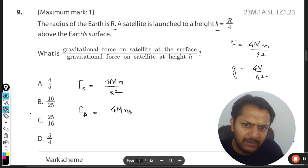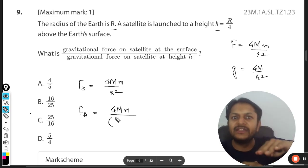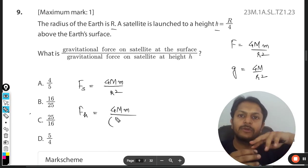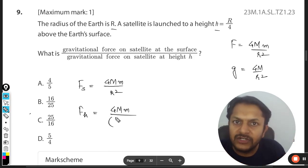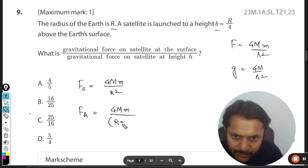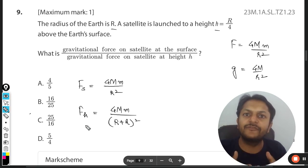The force at height h will be given by GMm divided by the total radius of the orbit. The radius of the orbit means from the center of the Earth we take the radius plus the height, so it will be F_h = GMm/(R+h)².